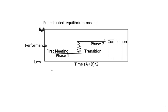This model categorizes group development stages into three: first meeting, transition, and completion. First meeting is also known as phase one and completion is known as phase two. Transition is the time between A and B, this is the time frame.